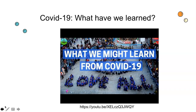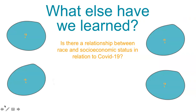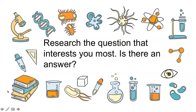In science and in life in general, it's so important to stop and reflect on what we've learned from our different experiences. Watch this video clip and reflect on what you have learned from your experiences with COVID-19 this year. Take a moment and write something down that you've learned. Is there a relationship between race or socioeconomic status and COVID-19? And does that teach us anything else about our society? Take a few minutes to research the questions that interest you about COVID-19. What information did you learn?